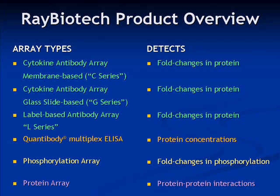Both the C-series and the G-series detect relative changes in protein levels. The label-based arrays, which are known as L-series, are a very high-density array platform capable of simultaneously detecting over 500 protein targets per array. Results from these arrays are also presented as relative fold changes in cytokine levels. Label-based technology will be described later in this presentation.